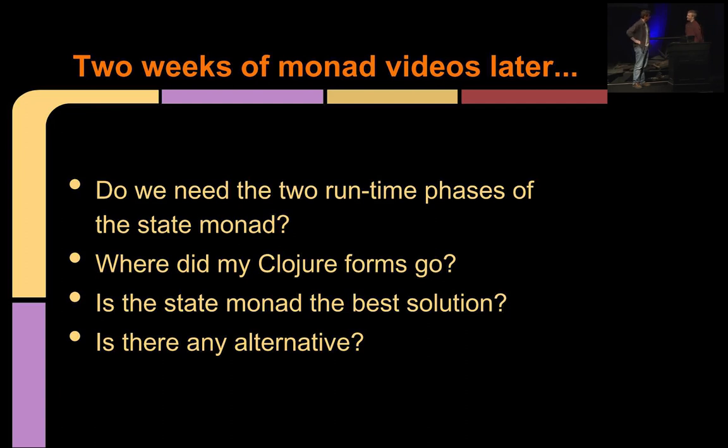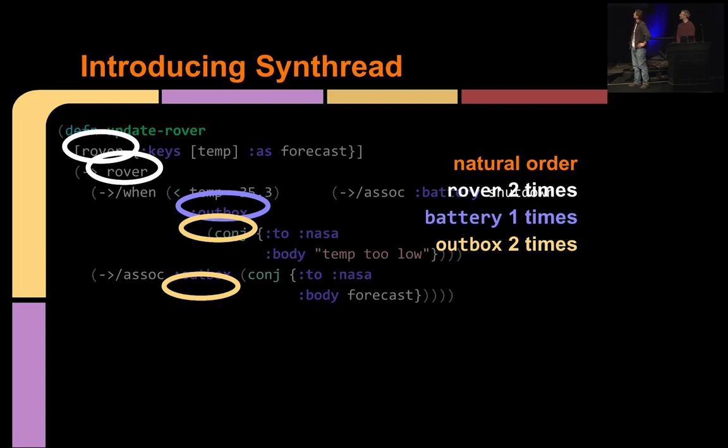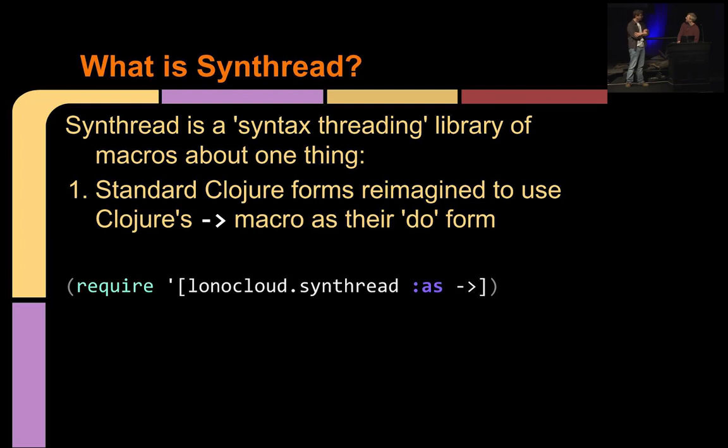Well, it's interesting you mentioned that. While you were writing monadic code, I was looking into some experiments. So I have a different way to write this code, and I'm going to call this a Synthread. This looks like monadic code. And this is with Synthread. So just to real quickly go over our score card. Natural order, just like the monadic code. We do mention the rover a couple times up at the beginning. And we're changing the battery once, and we're changing the outbox twice. But there's some weird-looking syntax in there. What is Synthread?